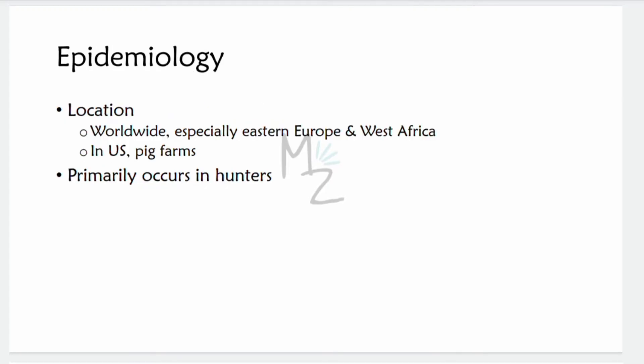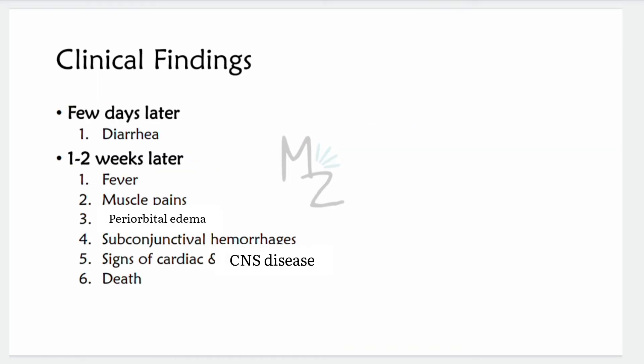Epidemiology: trichinosis occurs worldwide, especially in eastern Europe and West Africa. In the United States, it is related to eating home-prepared sausages, usually on farms where pigs are fed uncooked garbage. Bear and seal meat are also sources in many countries. The disease occurs primarily in hunters who eat undercooked wild game.